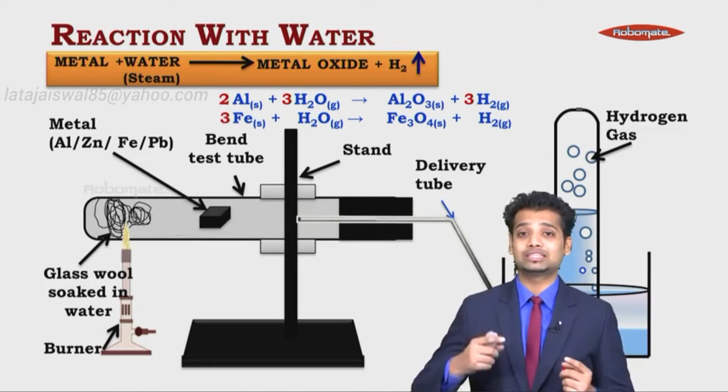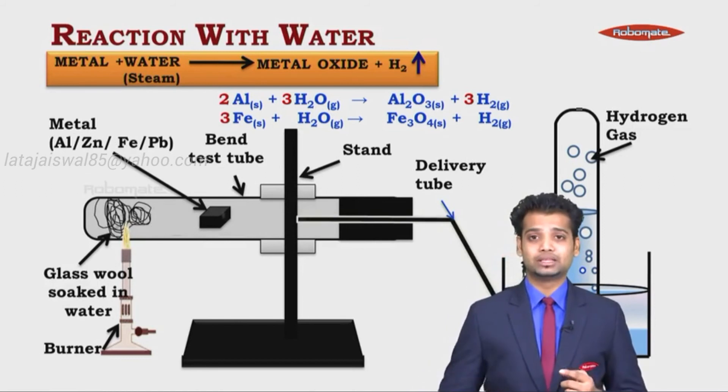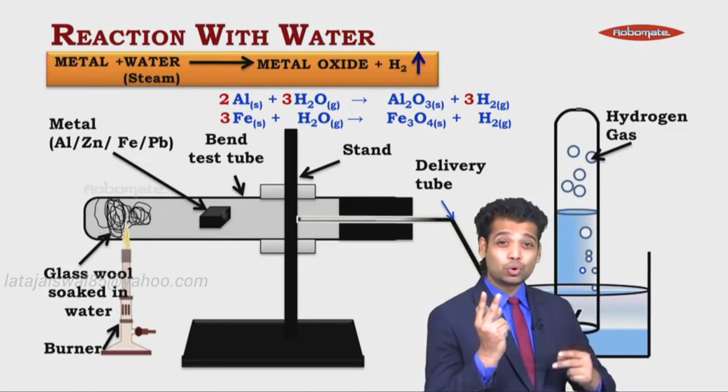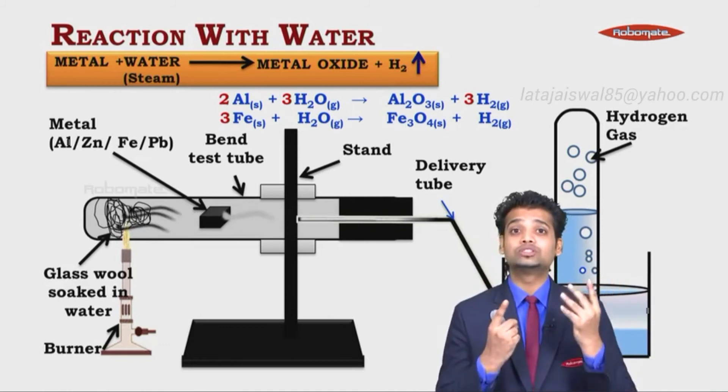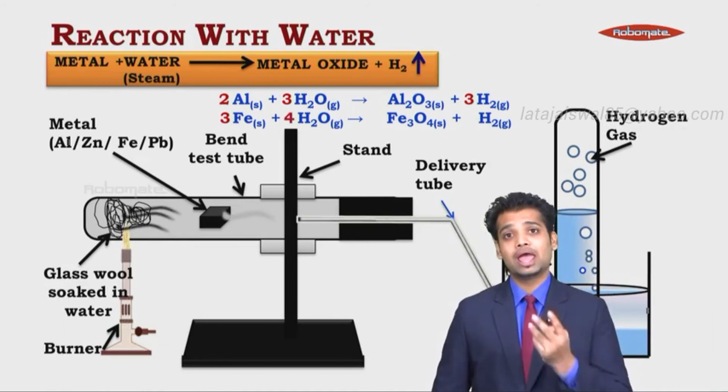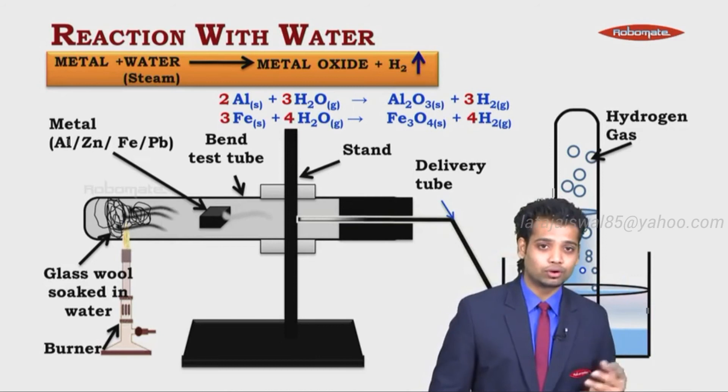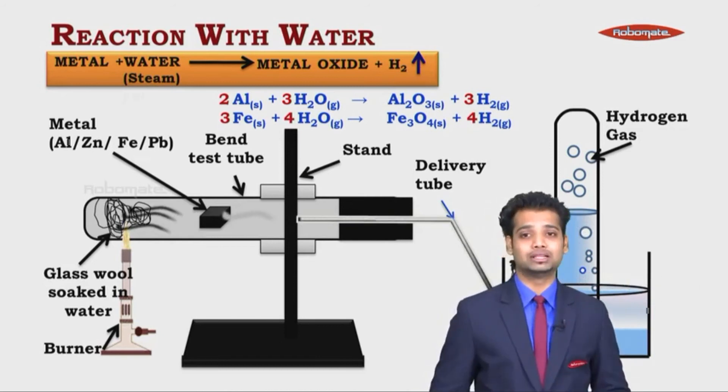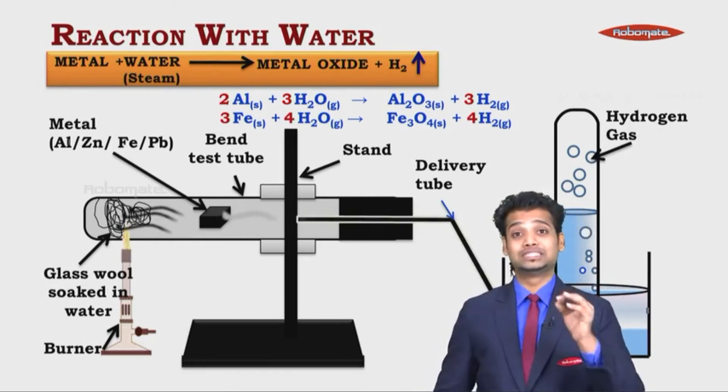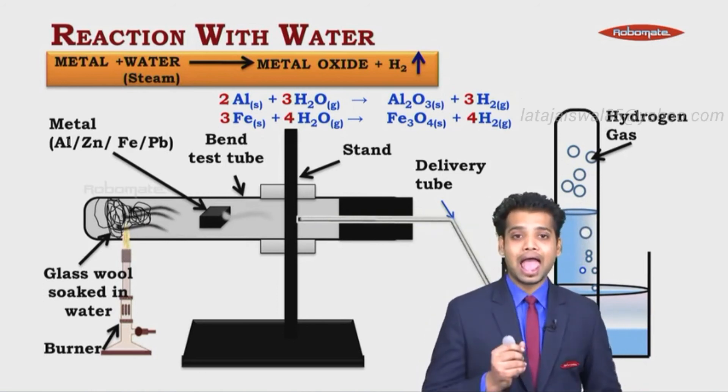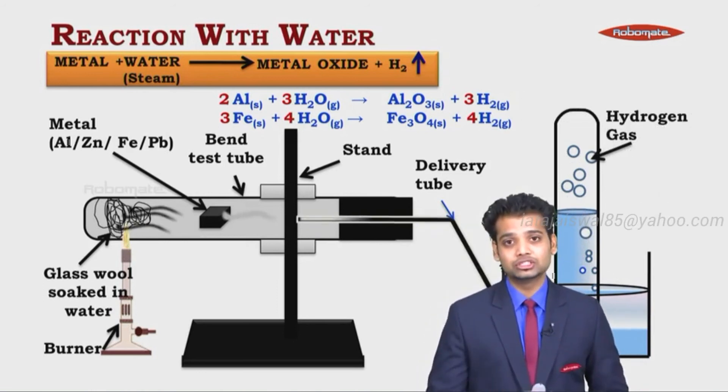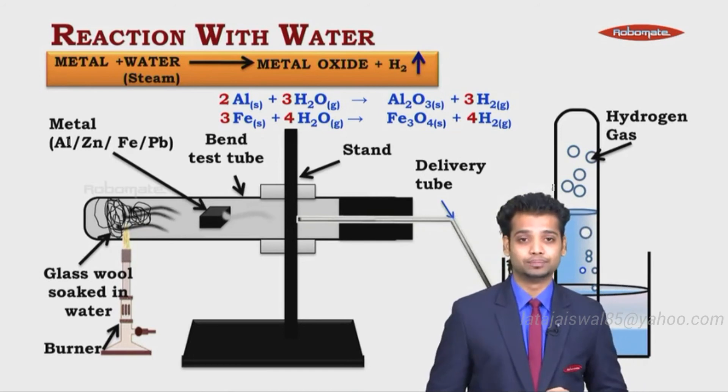Fe is 3 on the right hand side, 1 on the left hand side. Multiply it by 3. H is 2, H is just 2 on the right hand side. O is 1, O is 4. Multiply it by 4. H2 multiplied by 4 on the right hand side. Your reactions are balanced. Zinc is going to form zinc oxide. Pb is going to form lead oxide. And the reactions will be balanced in a similar manner. Now, what happens to even less reactive metals?